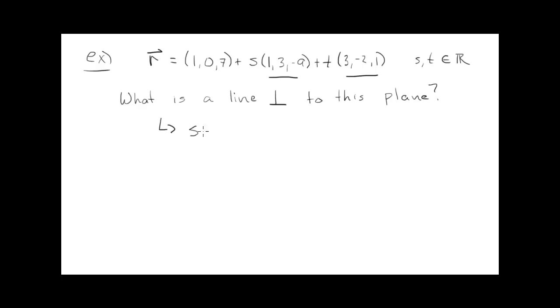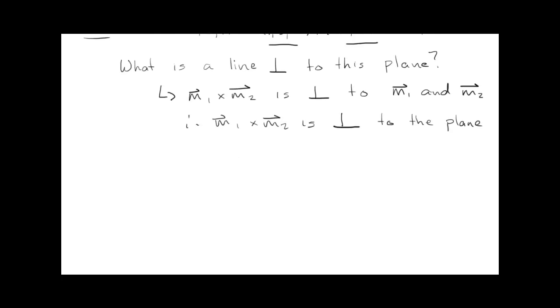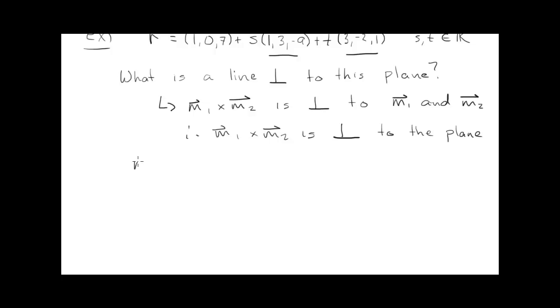The cross product. I guess it would just be M₁. And M₁ cross M₂ is perpendicular to both M₁ and M₂. And since M₁ and M₂ are both on the plane, this vector must be. Therefore, M₁ cross M₂ is perpendicular to the plane, so we could call it the normal to the plane. So let's find that vector perpendicular to this plane.